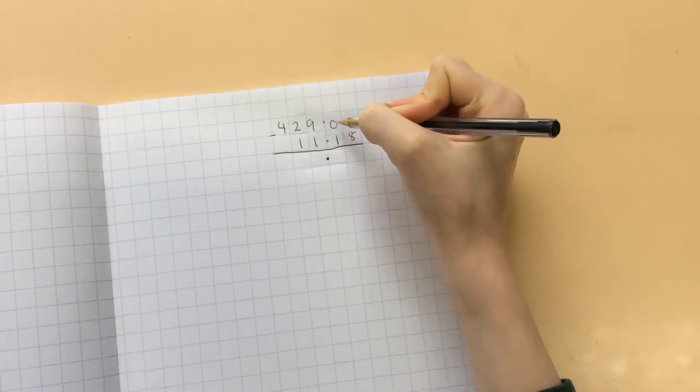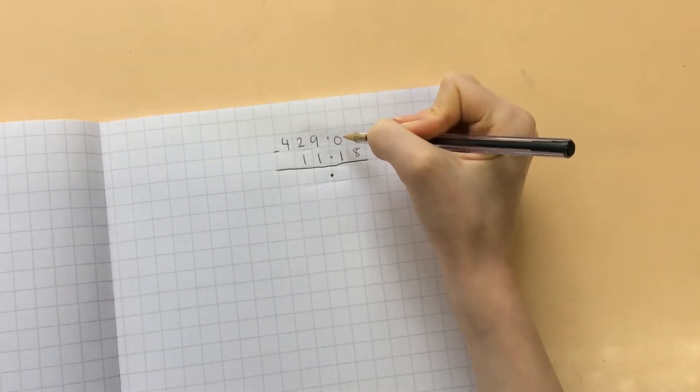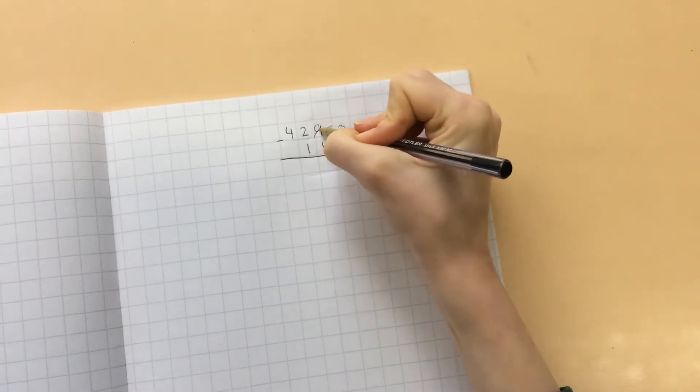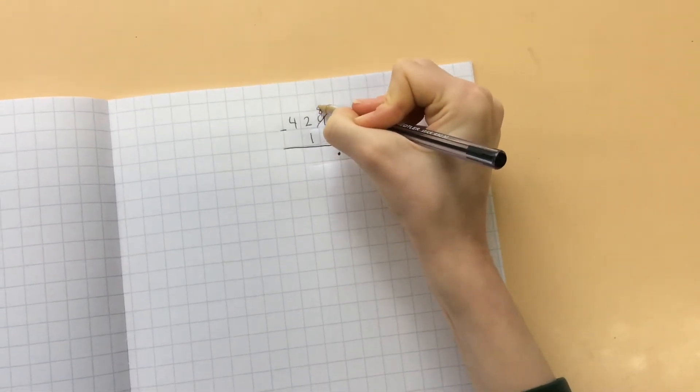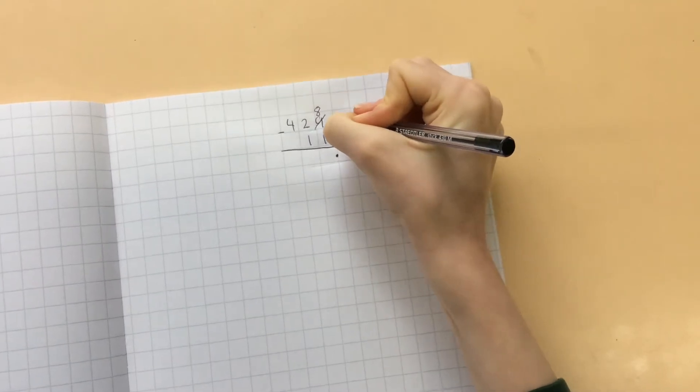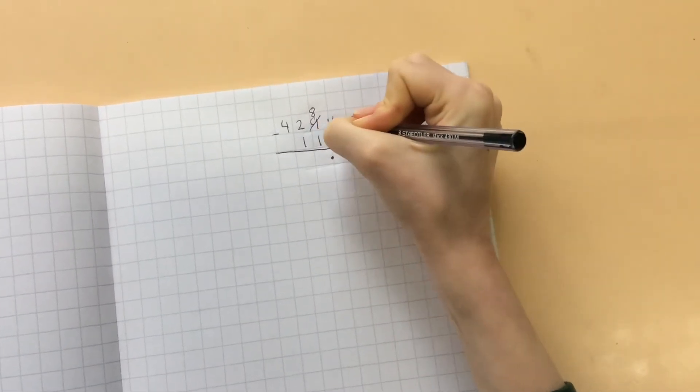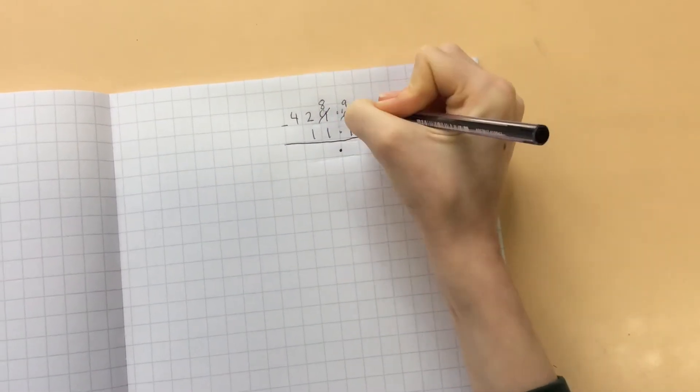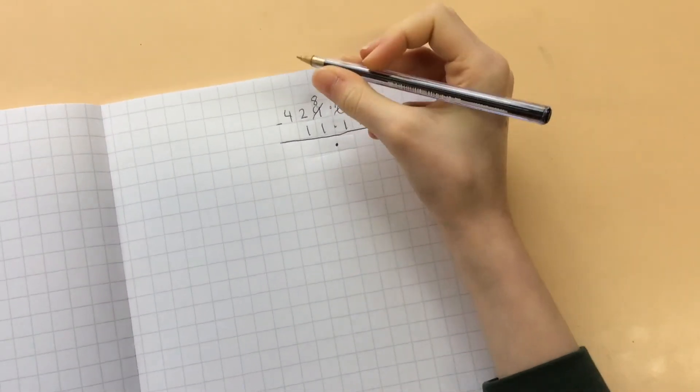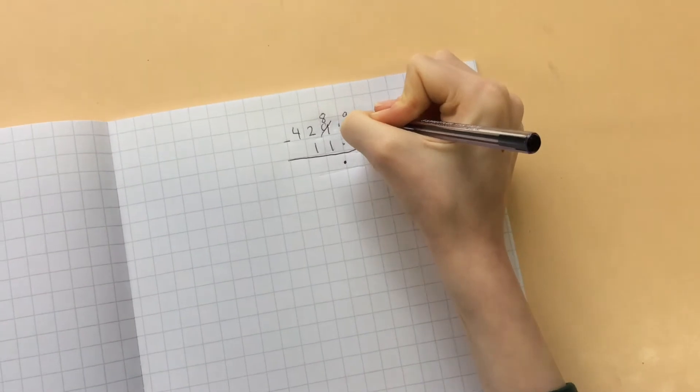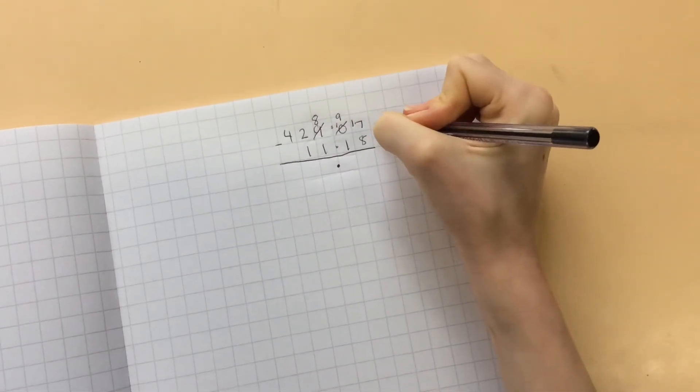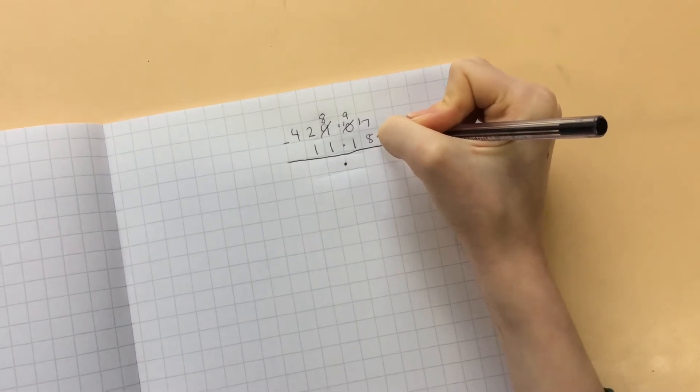But there's a problem. There's nothing in the tenths, so you have to look to the units. And you rename it and make it 8 units, and make this one 10 tenths. And you rename that and make it 9 tenths, and make this 17 hundredths.